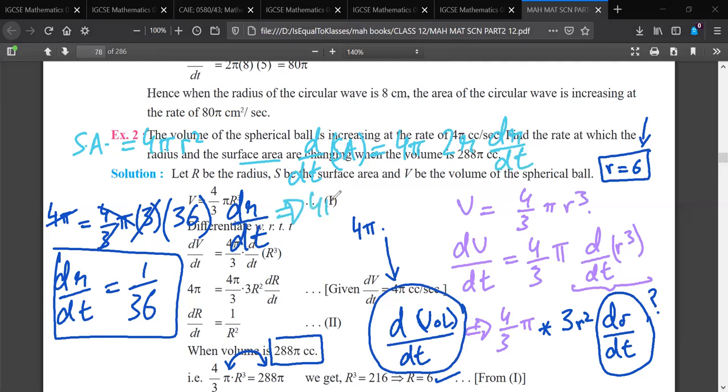The value of radius, the value is 6. dr/dt, we have calculated 1 by 36, which is 4 by 3 cc per second. So you understand that?